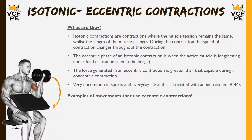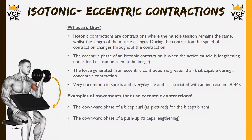Examples of eccentric contractions include the downward phase of the bicep curl and the downward phase of a push-up. When lowering from a push-up, the triceps are lengthening but are under load, controlling the descent. If they didn't work that way, we would just hit the ground hard, making push-ups very uncomfortable.